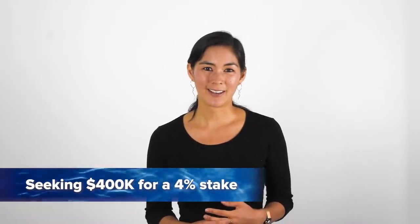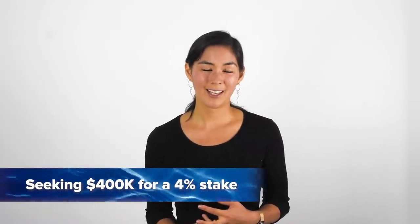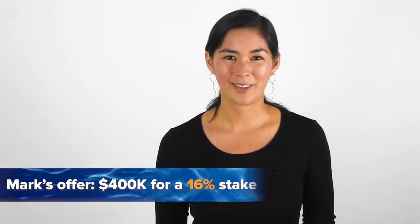But he did give me an offer. He said, I'm going to offer and you're not going to like it, which I did not like. He gave me a quarter of the valuation that I had asked for. I asked for $400,000 for 4% equity. He offered 16% equity. And that was the one part I didn't prepare for. I didn't actually practice the negotiation because I think in my mind, I didn't really expect to get a deal. Or maybe I thought that if I did get a deal, they would just give me exactly what I asked for.